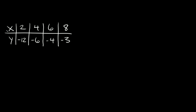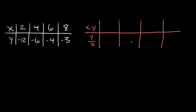Here's our first table example. Our x values are 2, 4, 6, and 8, and our y values are negative 12, negative 6, negative 4, and negative 3. We want to make a new table: on top we find the products by multiplying x and y, and on the bottom we divide y by x. Multiplying the pairs: 2 times negative 12 is negative 24; 4 times negative 6 is negative 24; 6 times negative 4 is negative 24; and 8 times negative 3 is negative 24.